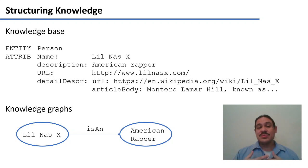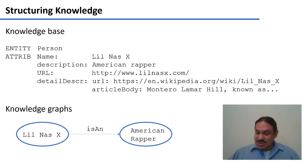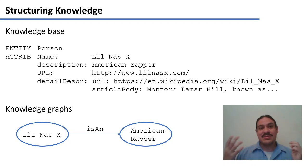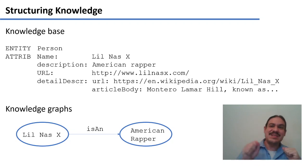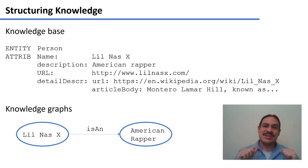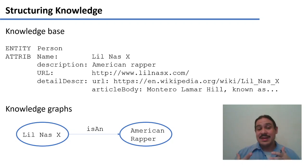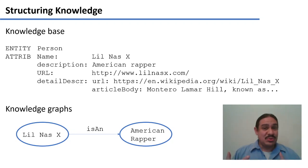Later in the class we're also going to build something called knowledge graphs, where we extract information directly from text. If we find a sentence like 'Lil Nas X is an American rapper,' we build a logical rule that says there is a property 'is an' which has two arguments: Lil Nas X and American rapper. Either way, these structures are composed of some description of the world and some attributes about the world.